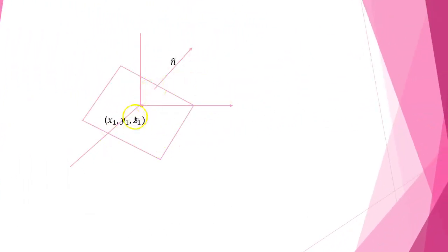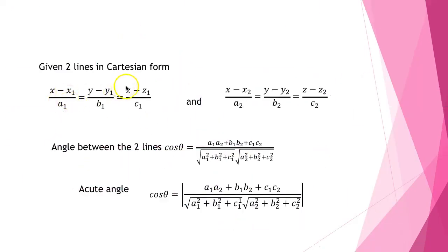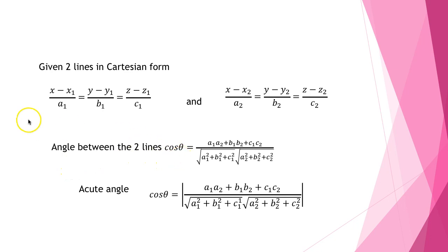Given two lines in Cartesian form — x minus x1 by a1 equal to y minus y1 by b1 equal to z minus z1 by c1, and x minus x2 by a2 equal to y minus y2 by b2 equal to z minus z2 by c2 — the angle between the two lines is given by cos θ equal to (a1·a2 + b1·b2 + c1·c2) divided by (√(a1² + b1² + c1²) · √(a2² + b2² + c2²)).